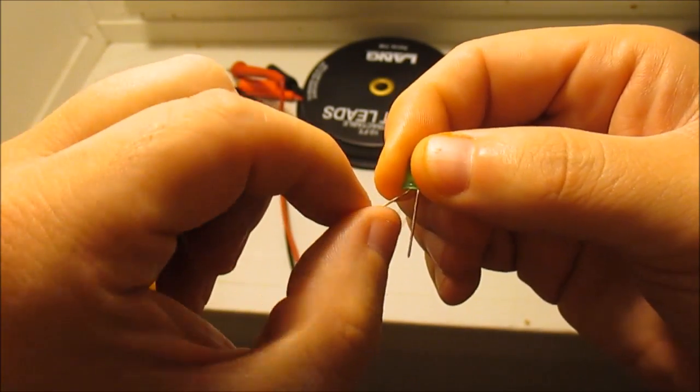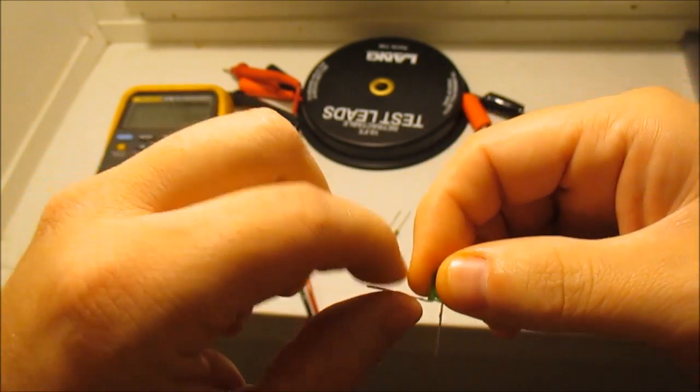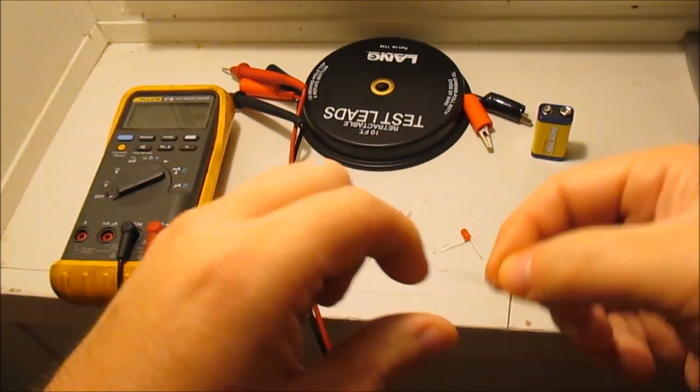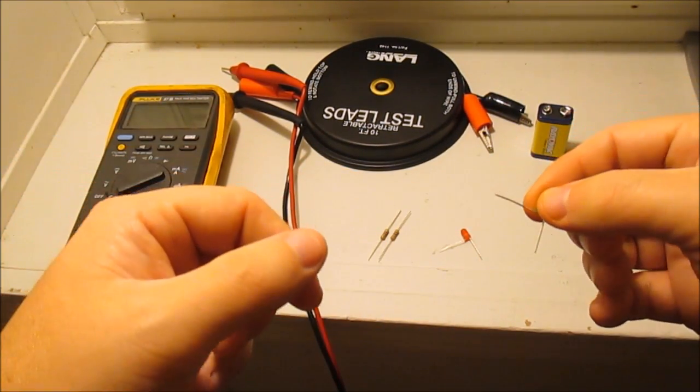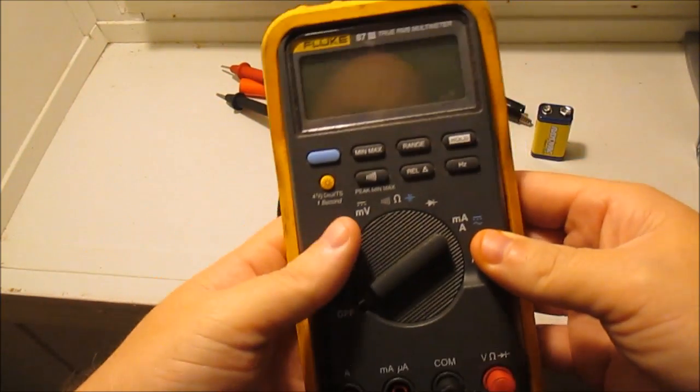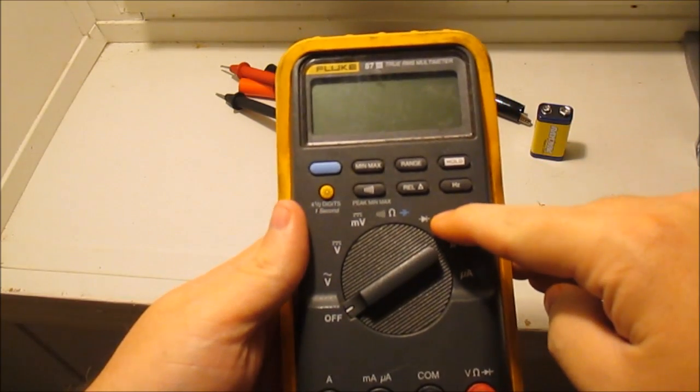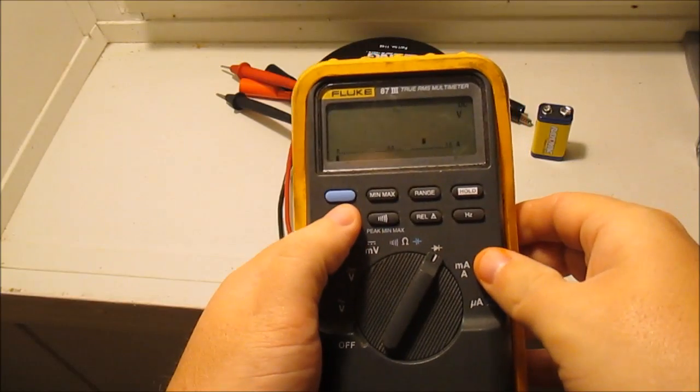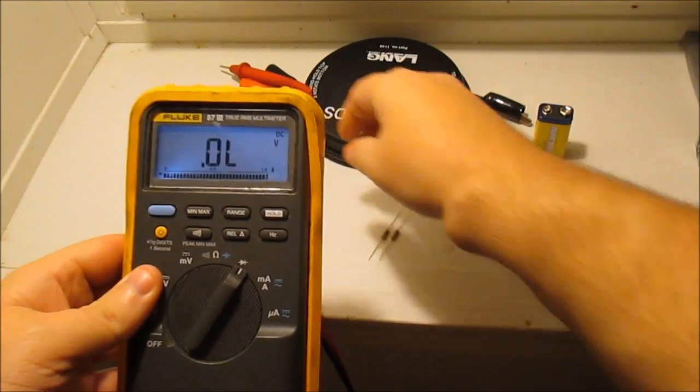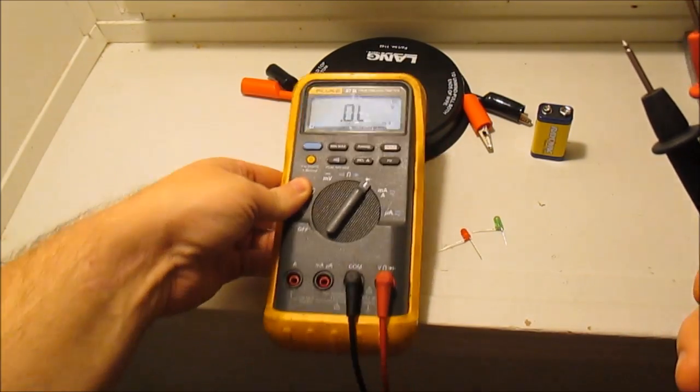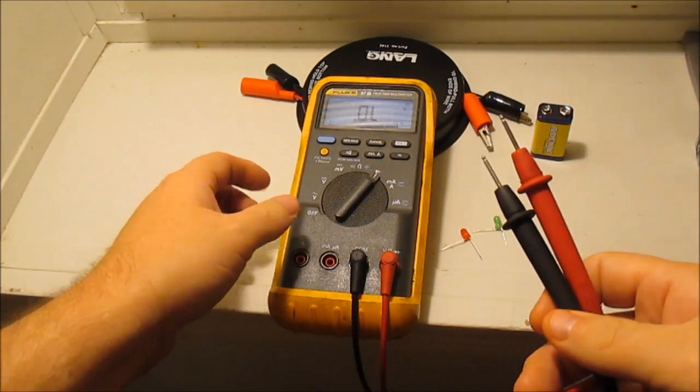Now let's say you don't know - you got a diode where both legs were the same and you didn't know. Well, if you have a Fluke meter like this one, this here is a diode test. Put your meter on diode test, use your leads.